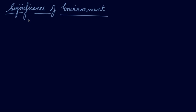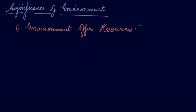Significance of environment. How does environment help us and what are its importances? Number one: environment offers resources for production. You get coal from your environment, you get iron, you get air, you get natural gas, and you get wheat, rice, and pulses just because of this environment. These resources like your mineral, wood, water, and soil are the free gift of nature to us and can be used as resources for the production process.